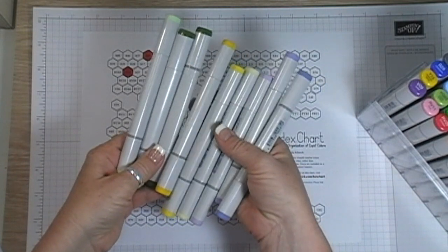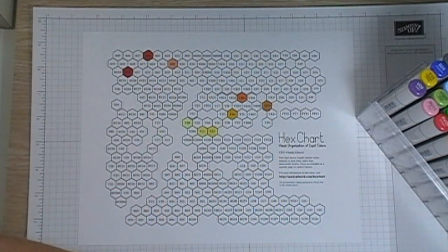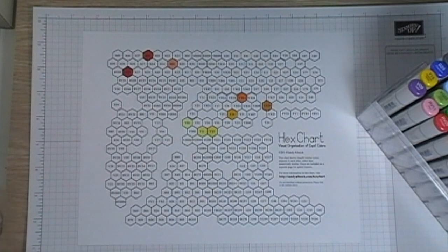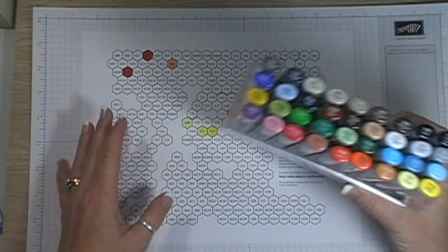So I went ahead and got three three packs from Michael's and then I decided it would be less expensive to just purchase them on Amazon in bulk. So that's what I've done and I got this big set.